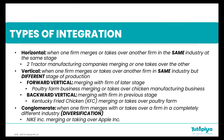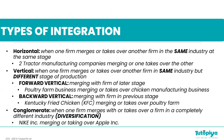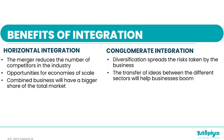Now let's look at the benefits of these types of integration. With horizontal integration, the merger reduces the number of competitors in the industry as the firms become one large firm. Therefore, there will be opportunities for economies of scale, which are cost-saving advantages due to the increase in production capacity and size of the firm.